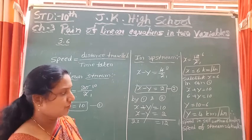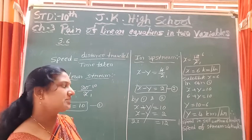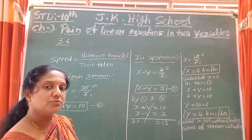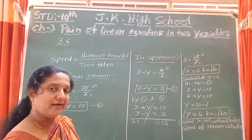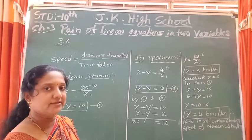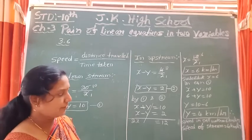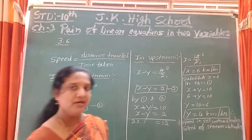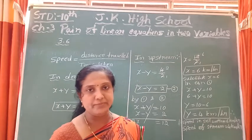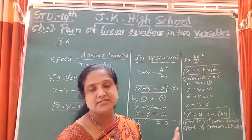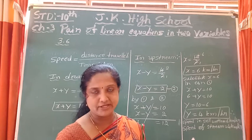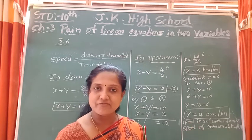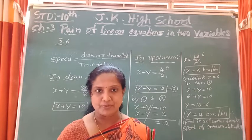The value of y as 4 km per hour means the speed of the stream is 4 km per hour. They asked us to find Ritu's speed in still water and the speed of the current, and we found both. This is the way of finding the solution for statement problems.